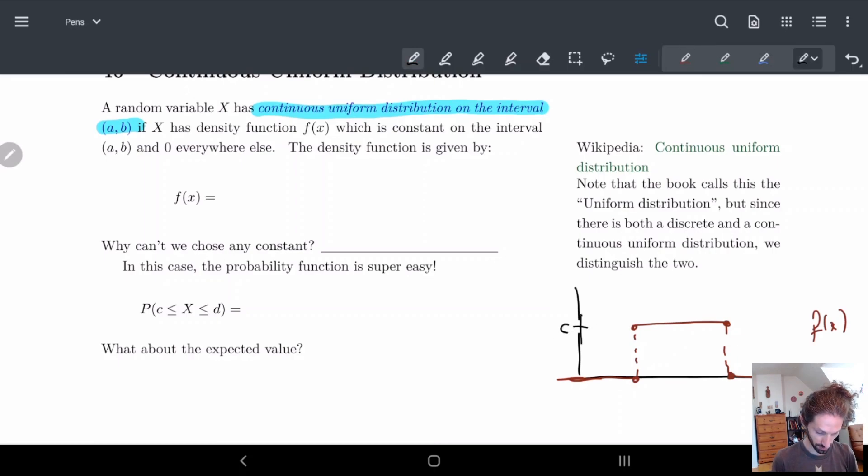And so basically the formula for this is, we already know zero is everywhere else and the constant is actually going to be set for us. One over b minus a if a is less than x less than b. Here we're looking at my interval a b. Now why is this the case? Why do we only have one constant? Why can't I just choose any constant?